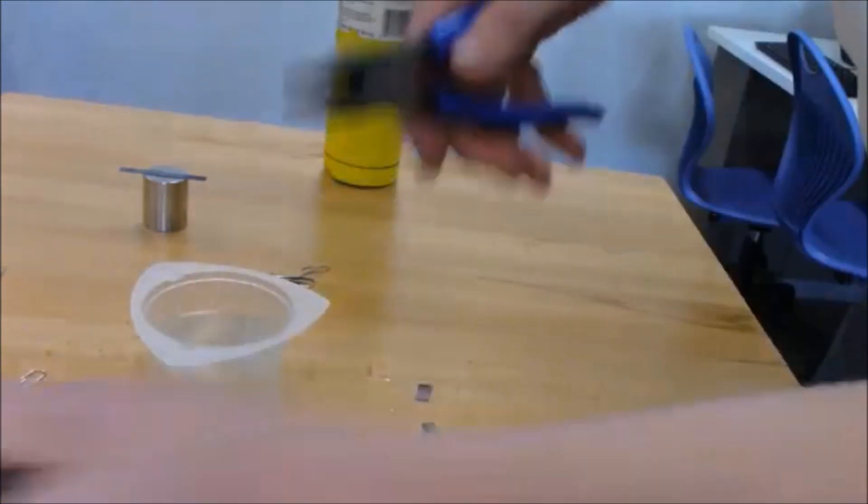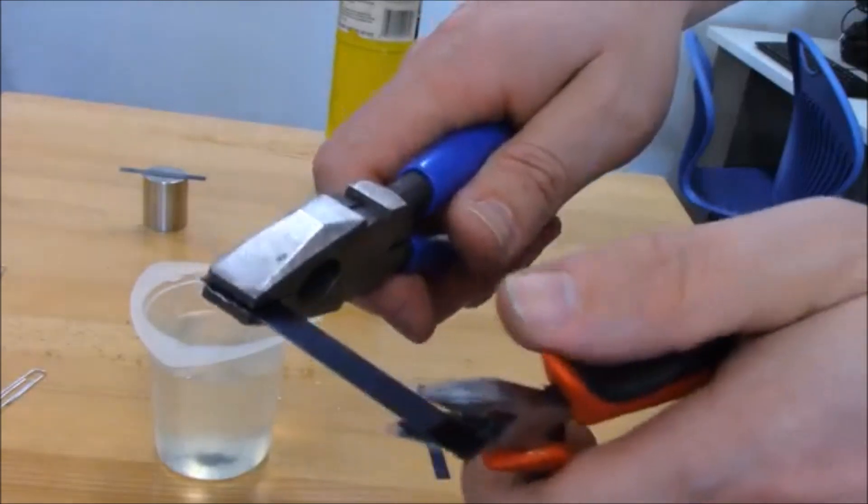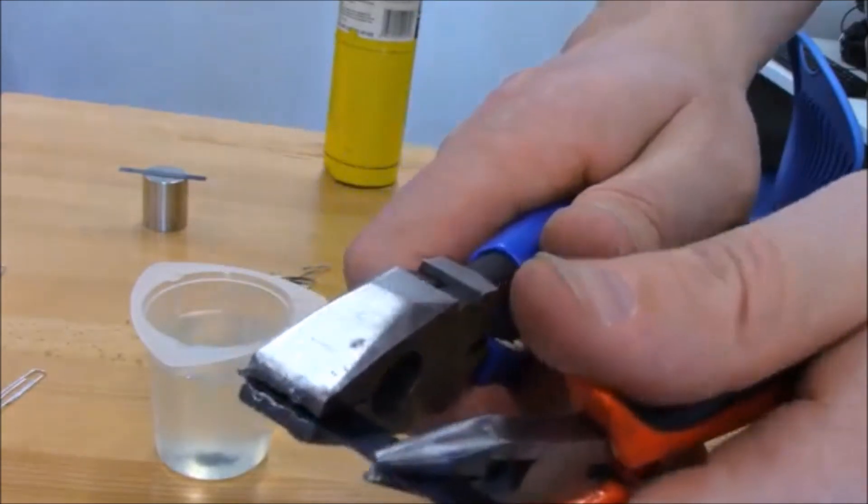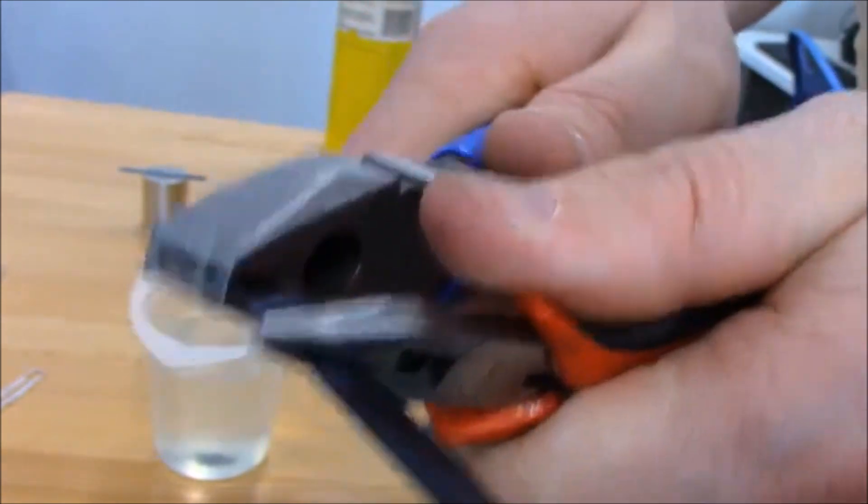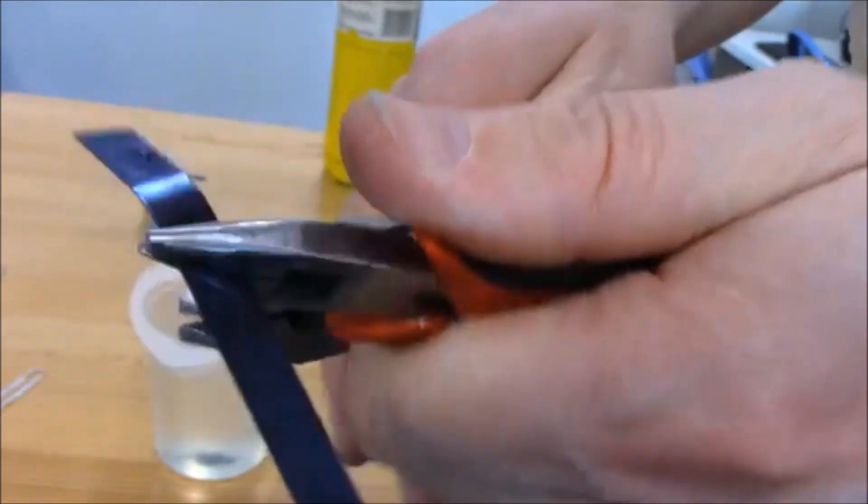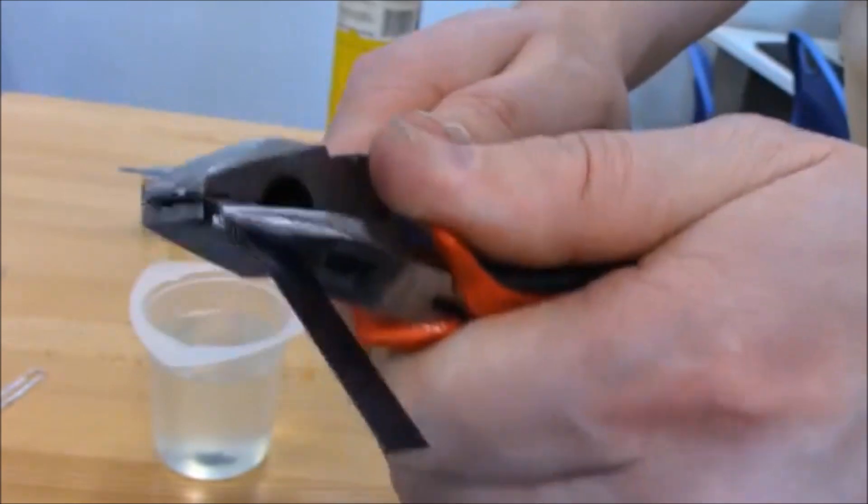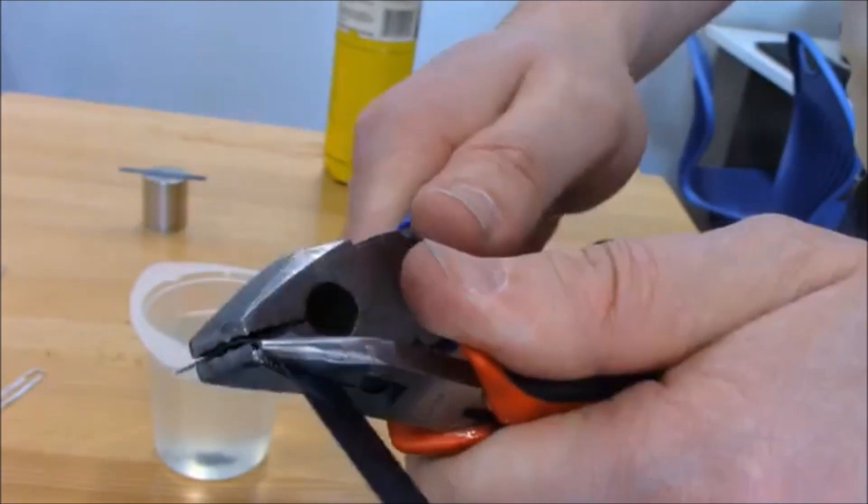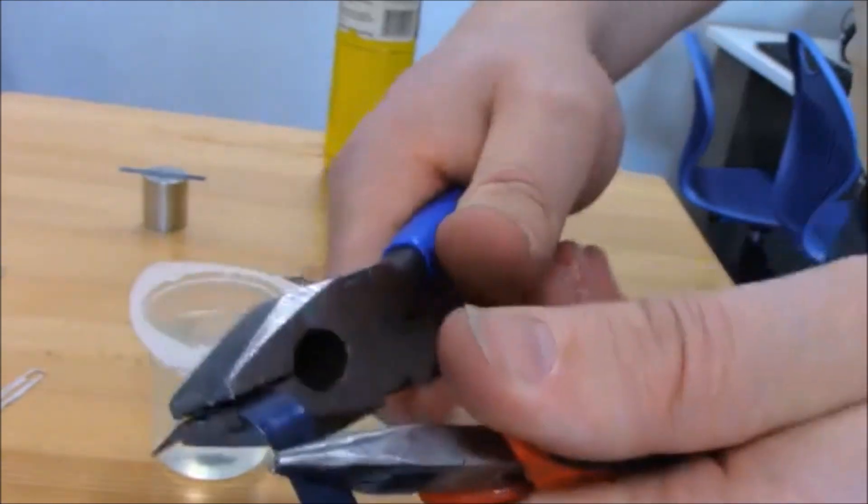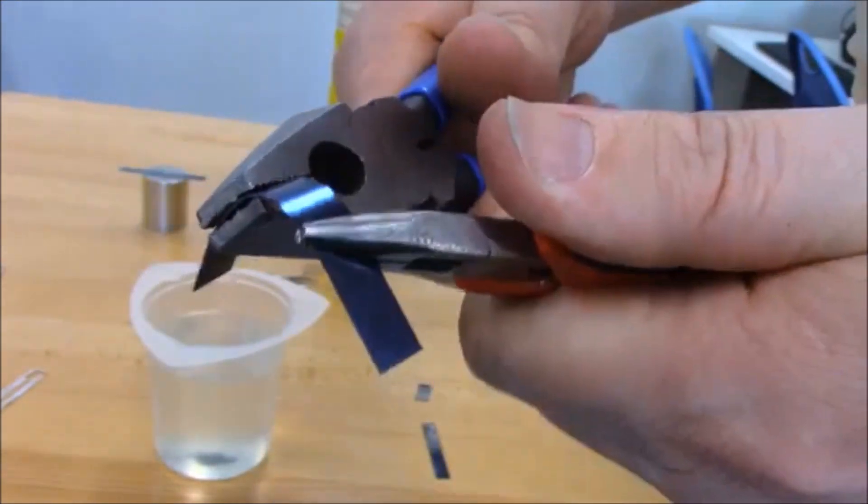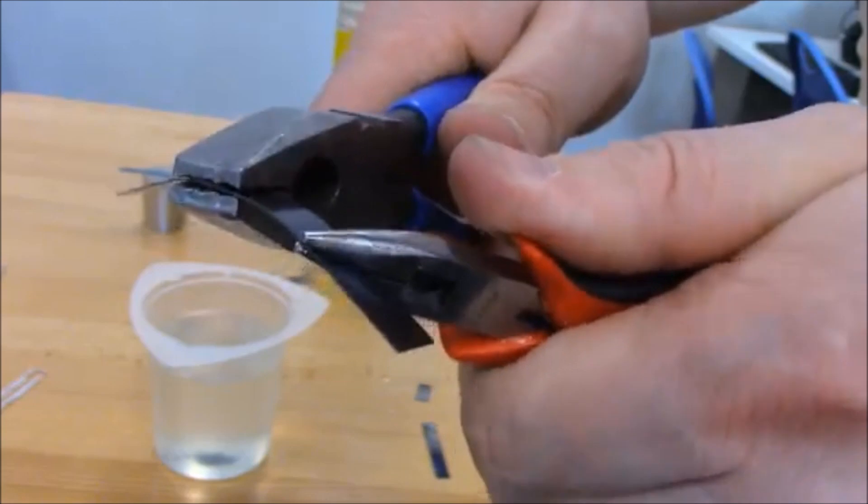If I do the same thing with one that never got treated, I can bend it and it comes back. It's still a little bit bent, but it mostly comes back. It's supposed to be springy. There is a point where it won't come back, but it bends and it still wants to come back.